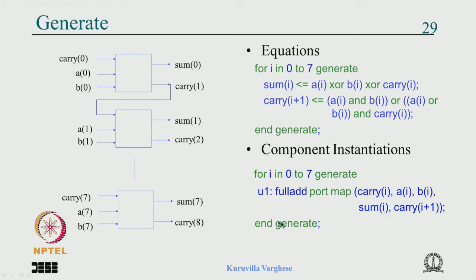In the next iteration carry1 is the input, so the output of the first stage goes as the input of the second stage, and you get this ripple carry structure by this simple generate statement. This can be used very easily when the structure is very symmetric or regular.